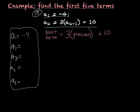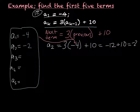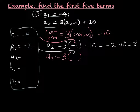To find A sub 2, I take 3 times my previous term. The previous term was A sub 1, which is negative 4. So I get 3 times negative 4 plus 10, which is negative 12 plus 10, or negative 2. So A sub 2 is negative 2. Now my previous term is negative 2, so A sub 3 equals 3 times negative 2 plus 10, giving me negative 6 plus 10, which is positive 4.